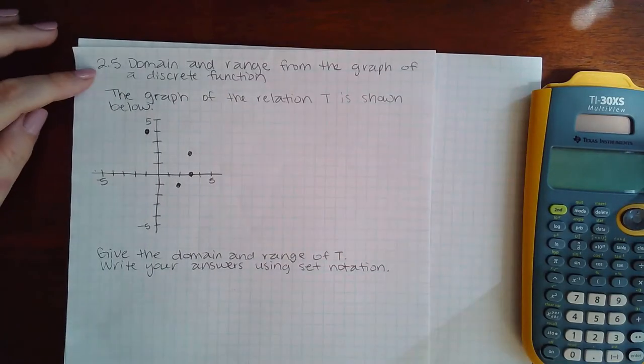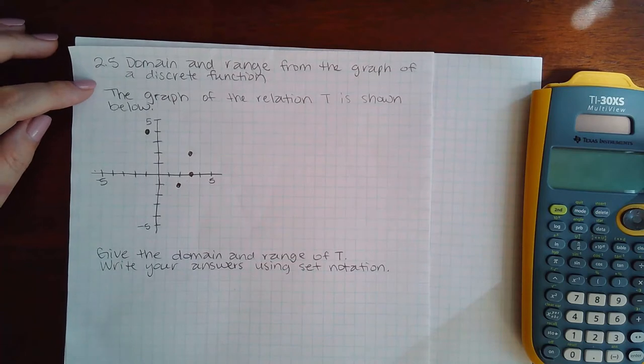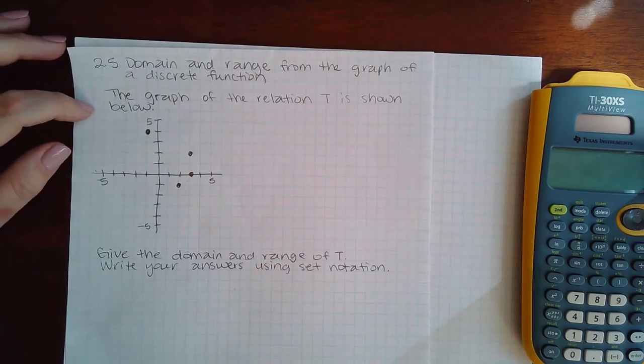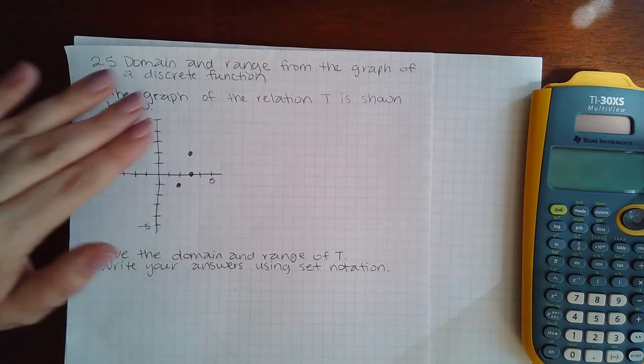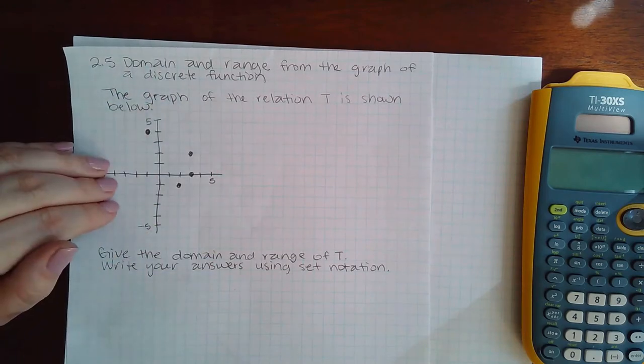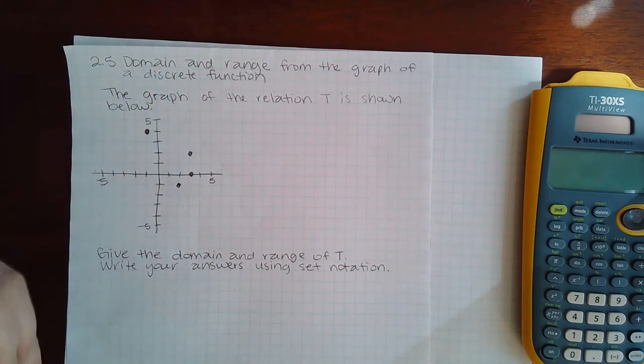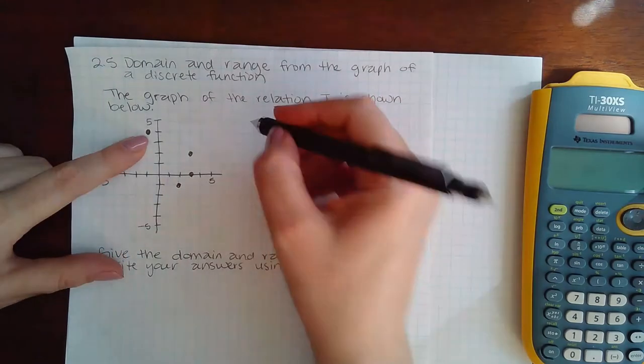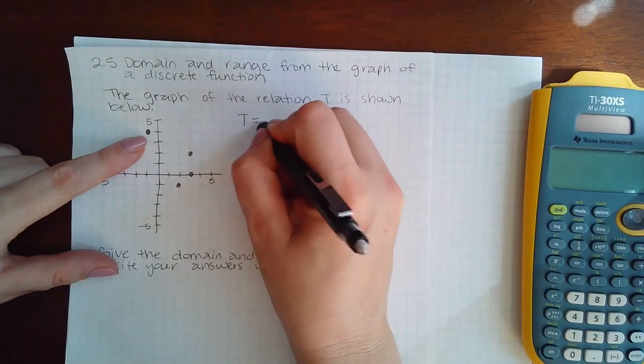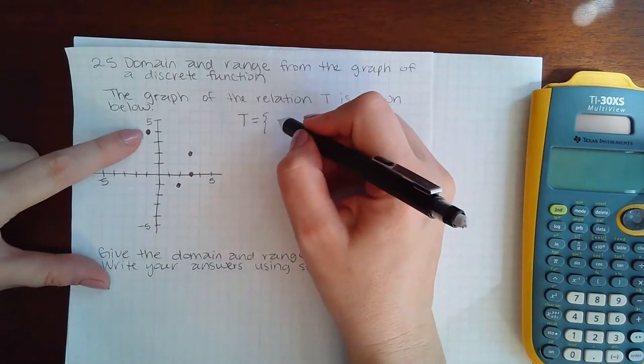Okay, here we're doing 2.5 domain and range from the graph of a discrete function. This problem, although the relationship has been given to me in an image, it's exactly like one of the ones we've done with the sets. What I can do is rewrite the function T as the set of